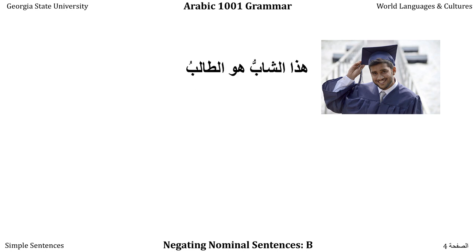In a normal sentence, 'Hatha Ashabu huwa atalibu' — this guy is the student. Both the Mubtada, or starting point, the first half 'Hatha Ashabu,' and the Chabar, or predicate, the second half 'atalibu,' are in the Marfu case by default. Since they are both definite, we use a single Dhamma to mark them: Ashabu, atalibu.